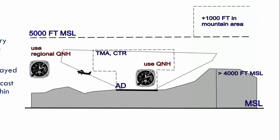When you are flying under the transition altitude, the QNH of the aerodrome is set on the altimeter. That means that when an airplane is on the runway of the aerodrome, the altimeter will indicate the elevation of the aerodrome above mean sea level. QNH indicates that you are using the atmospheric pressure adjusted to the sea level. When you are flying outside of the traffic zone of the aerodrome, you have to set regional QNH.